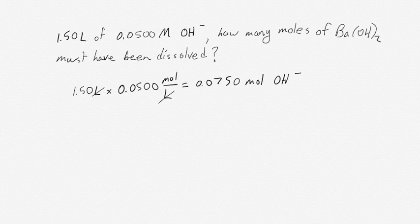So we know in our 1.50 liters of 0.05 molar hydroxide ions, we have 0.075 moles of hydroxide ions. And if those came from the barium hydroxide, we know that there are two hydroxides for every one barium hydroxide. So we can again set up a mole ratio in order to work out how much product we actually needed to dissolve.